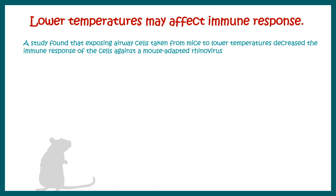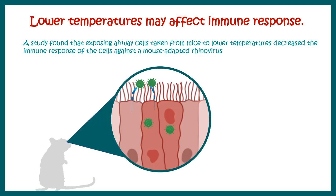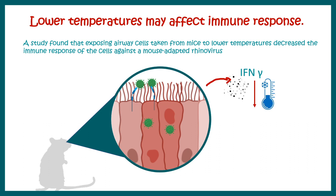Lower temperatures may also affect the way cells respond to viral infections. It has been seen in mouse models that cold viruses lead to infection in the nasal epithelia. Generally, nasal epithelia secrete molecules like interferons, which are alarming molecules that allow nearby cells to get well prepared for viral combat. But after cold exposure, interferon gamma levels decrease, so these cells are not sending out those alarming signals and not helping neighboring cells prepare for viral infection. This is one of the reasons cold can reduce our immune function.